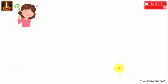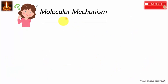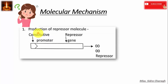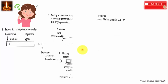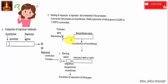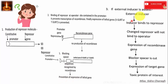Now let's see the molecular mechanism behind terminator technology. First is the production of a repressor molecule. A late embryogenesis abundant (LEA) promoter is introduced to control the expression of the repressor gene, resulting in production of a repressor molecule. This repressor molecule attaches at the operator site contained in the promoter region, preventing the transcription of the recombinase gene. So there is no production of the recombinase gene, and finally the expression of the lethal gene is prevented.